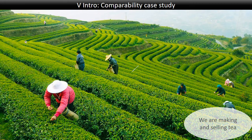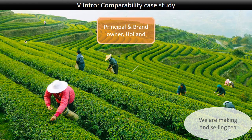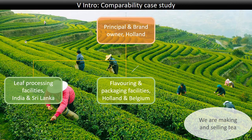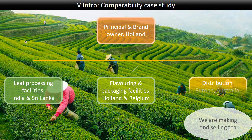Before we start with comparability, let us work on a case study that will make the material much more alive. We are selling and making tea. We have a principal and brand owner in the Netherlands — a Dutch company — which has leaf processing facilities in India and Sri Lanka, where the leaves are dried and processed ready for manufacture. Those processed leaves are then moved to Europe, where there are flavoring and packaging facilities in Holland and Belgium. The different flavors of tea are made, packaged, and sold to supermarkets and consumers. They also have distribution centers in Europe, Australia, New Zealand, and North America.